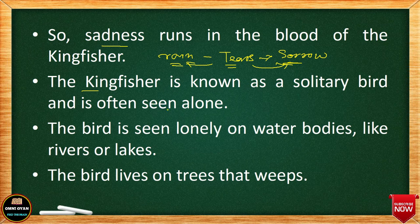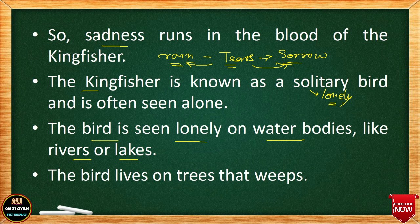The Kingfisher is known as a solitary bird and is often seen alone. The last two lines of Stanza One say: 'she haunts the lonely pools and keeps in company with trees that weep.' The Kingfisher is often seen alone on water bodies like rivers and lakes — pools here means water bodies. It is a lonely-living bird without any company.